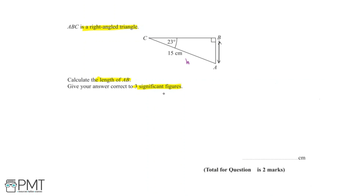Now looking at 23 degrees, line CB is adjacent to this angle, and so we'll call this the adjacent side by labelling it A. And line AB is opposite the 23 degree angle, and so we can say that line AB is the opposite, which we'll label as O.